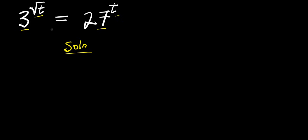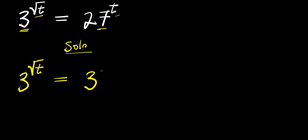Now, we can see that the two bases here — this is 3, and 27 — we can express 27 as 3 to the power of 3, that is 3 times 3 times 3. And this is raised to the power of t.